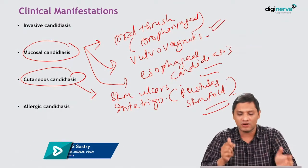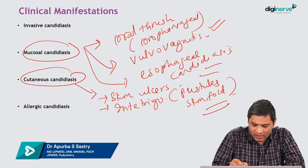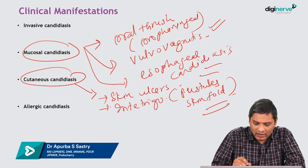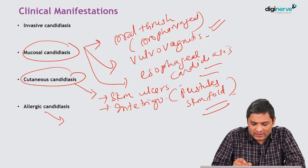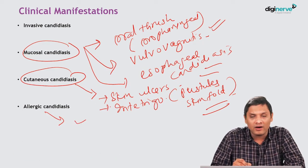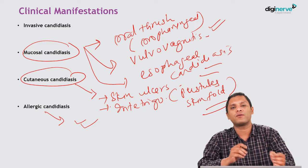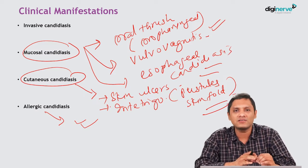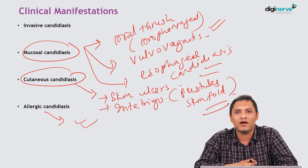This is called intertrigo. Allergic candidiasis may result from various allergens produced by Candida. These are the various forms of clinical manifestation.